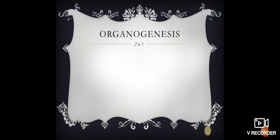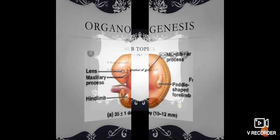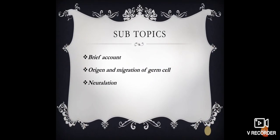Organogenesis, what is Organogenesis? It is the phase that starts at the end of gastrulation and continues until birth. As usual, you can see this diagram. My presentation is in three parts: firstly brief account, secondly origin and migration of germ cells, and finally neurulation.